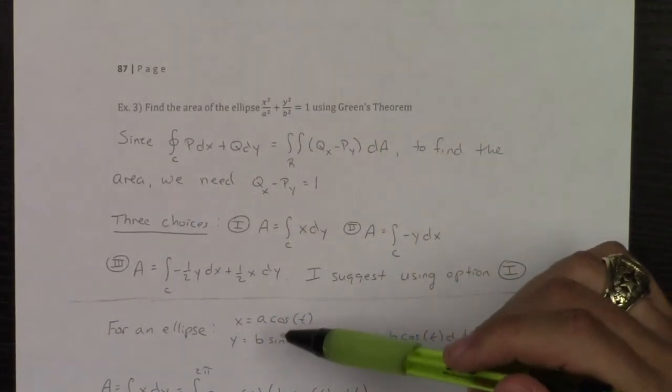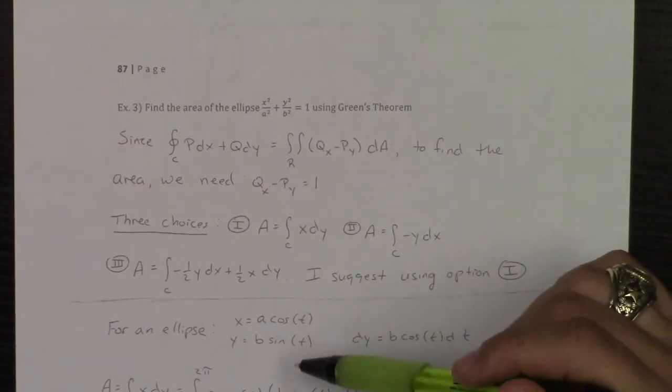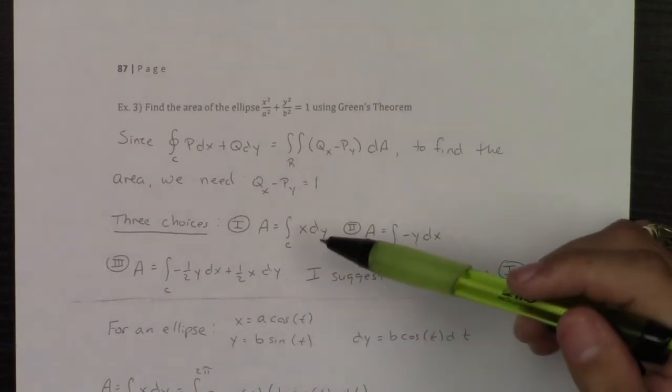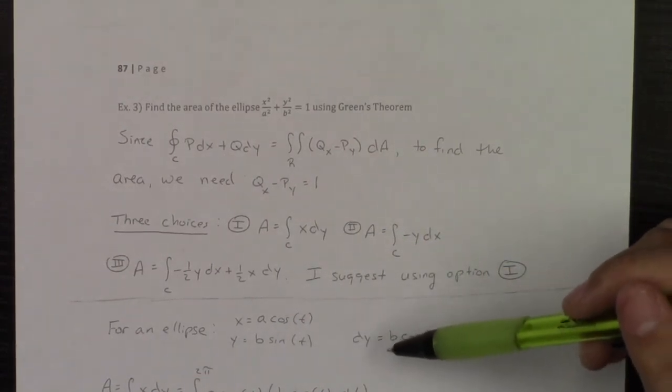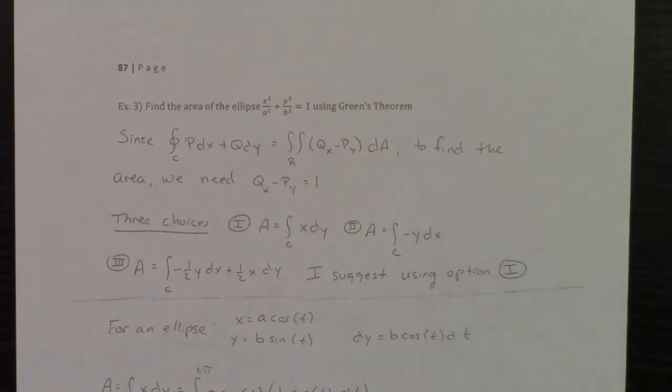And so now we have to revert back to line integrals and go through that three-step process. Step one is to parameterize your surface. And if you look back at that cheat sheet with an ellipse, your x is going to be a cos t, y is going to be b sin t. Now, because I'm going to do the line integral of x dy, I've already got the x, I really only need dy, dy being the derivative of y.